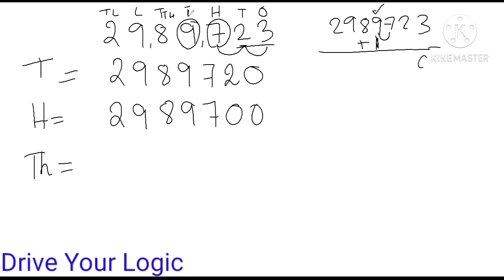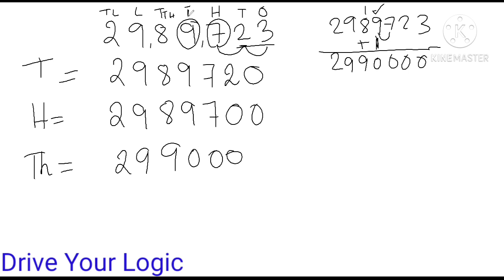Now the full thing will change: this 3 becomes 0; 9 plus 1 is 10, carry 1; 8 plus 1 is 9; then 9, 2. So your answer becomes 2,990,000. This is very important — when there is a 9 in the rounding place, you add 1 so it becomes 10, and that carry 1 propagates forward. Don't forget this — it is a very important case.